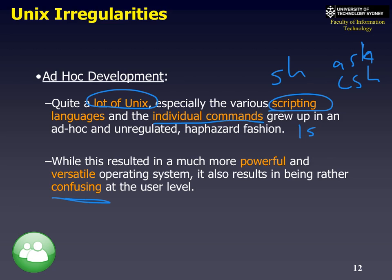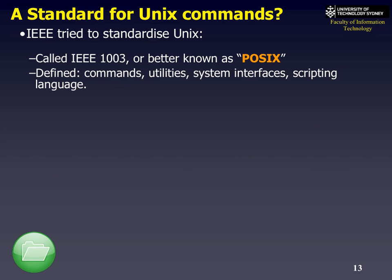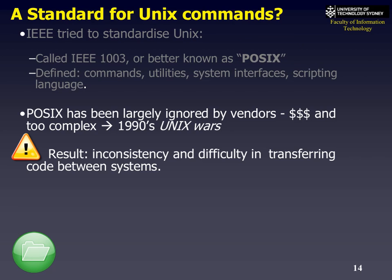Things get confusing, so they tried to standardize it. IEEE tried to standardize, calling it POSIX—they defined what the commands and system calls were. It kind of worked and kind of didn't. It was very complex, and nobody could really agree on it. That ended up in the 1990s Unix wars.